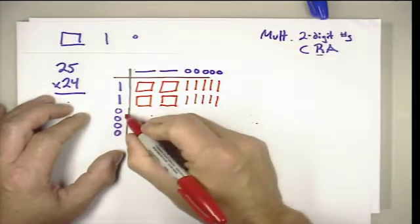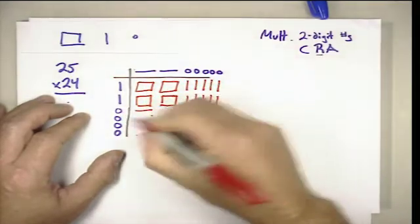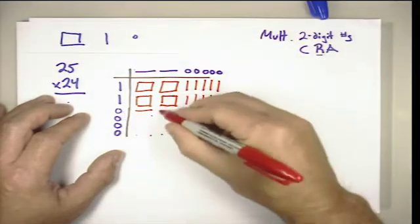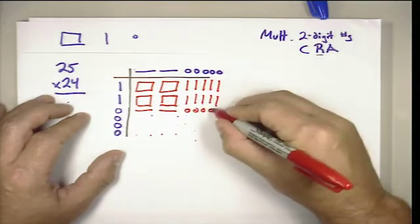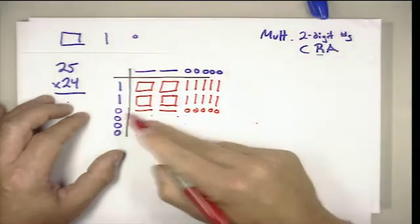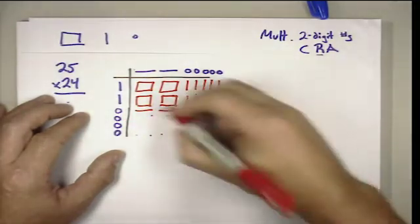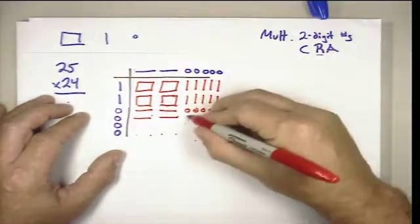And now we have to handle our ones. So one times ten is ten, one times ten is ten, and then one times one is one. So now we know each time we multiply by one we're going to get two tens and five ones. I can go ahead and fill out those rows.